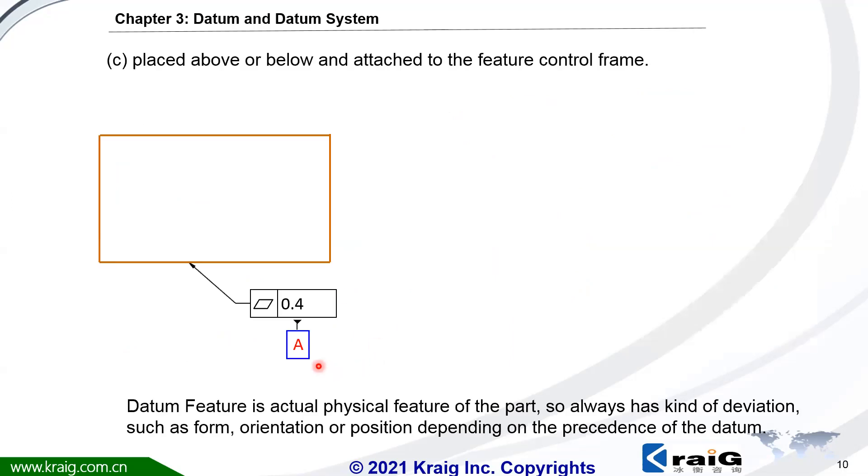We have learned to specify the datum directly to the feature, to the surface or to the extension line. Here, we could also specify the datum letter under the feature control frame, or even on top. That's fine. That means the tolerance feature pointed by this feature control frame is your datum A. It's still the same thing. This datum A is the datum feature here.